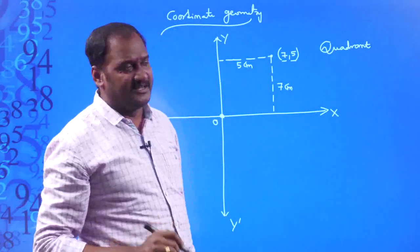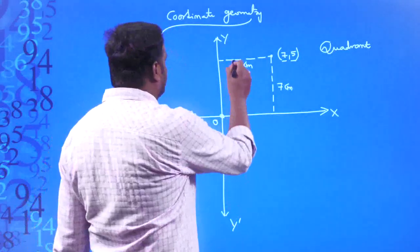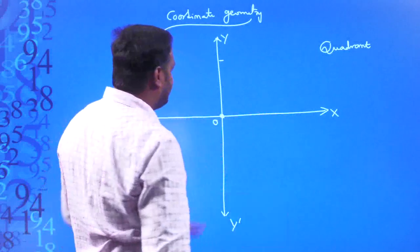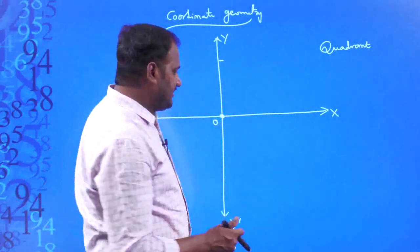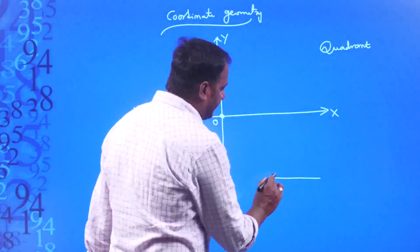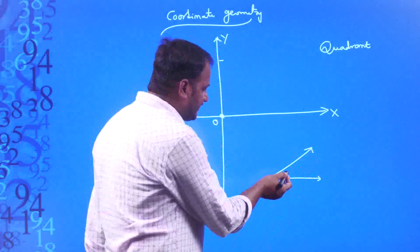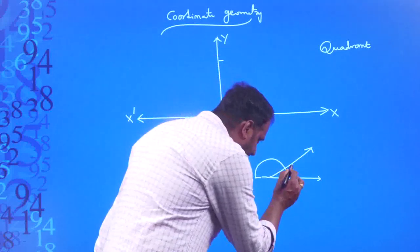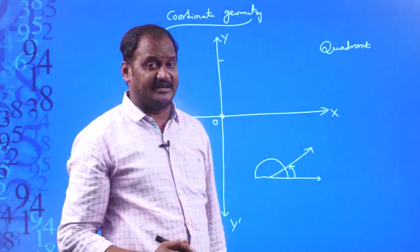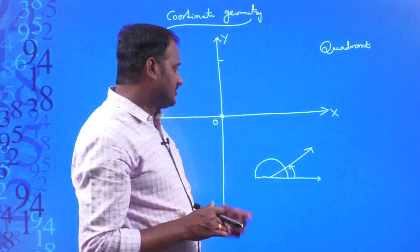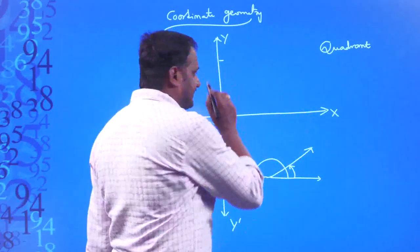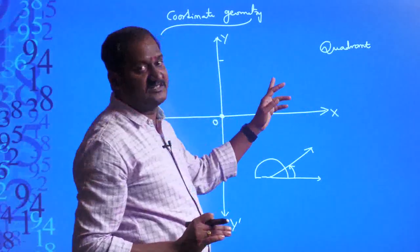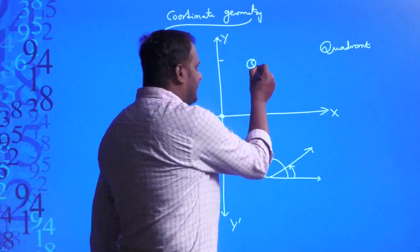That is called a quadrant. Now let us name those quadrants. I am naming the quadrants according to the position of the x-axis and y-axis. I will start from here because when you form an angle between two rays, you place your protractor and measure from the right side. The angle should be measured in the anti-clockwise direction. That is why we start from positive x-axis. This region is called the first quadrant, indicated by Q1.